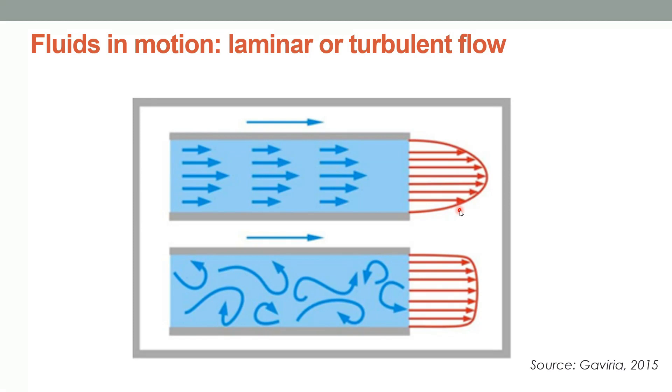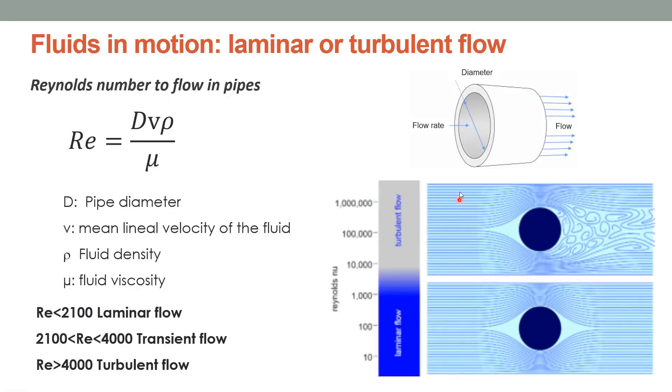How can we know if a fluid moves in a laminar or turbulent way? We can know it through the Reynolds number. This number is a dimensionless parameter and it represents the ratio of inertial forces to viscous forces in a fluid. When fluid travels within a pipe, we'll use Reynolds number for pipe flow with this equation, where d is the diameter of the pipe, v is the average velocity of the fluid, ρ is its density, and μ is its viscosity.